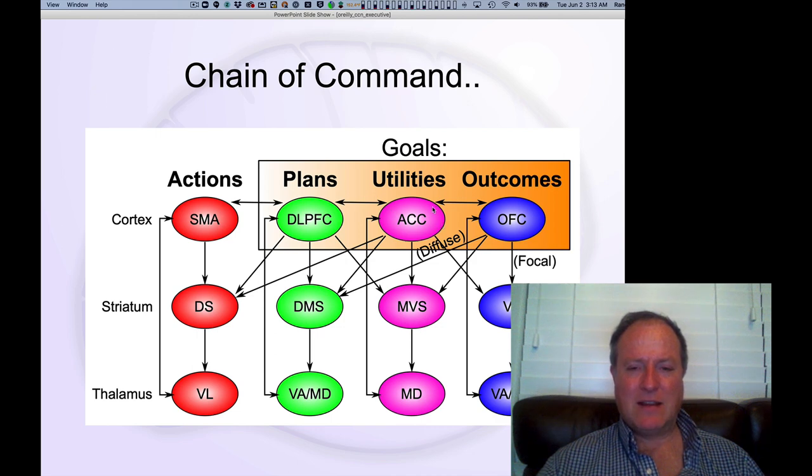And so this anterior cingulate cortex, that cingulate cortex we're talking about, the anterior portion of that seems to be the final integrator taking into account cost information that's maybe represented in a slightly more posterior area of anterior cingulate cortex, along with the positive outcome information, what you could get by doing some plan of action.